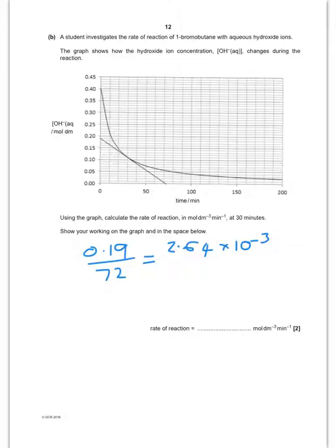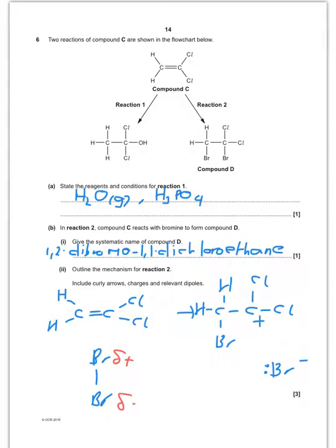Okay, so using the graph calculate the rate of reaction. So I've taken the mark scheme graph and popped that there so you can show the tangent that they've drawn there at 30 minutes. And then you need to work out the gradient. So the gradient is of course going to be this distance divided by that distance there, and if you do that you get it to be 2.64 times 10 to the minus 3.